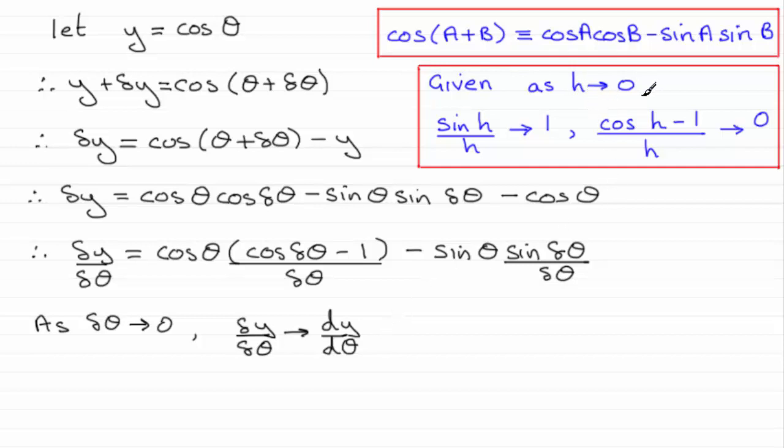And this has got as h tends to 0. Well, I'm going to replace the h by delta theta. And as I say, we should be familiar with these results. If not, we'll just assume that they're correct. And so that would lead to sine of delta theta over delta theta tending to 1. So this term here would tend to 1. And the cosine of delta theta minus 1 over delta theta would tend to 0. That's that part there.